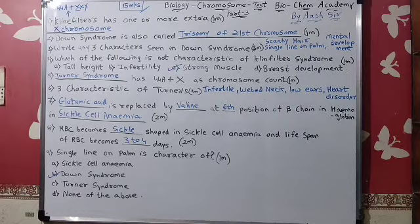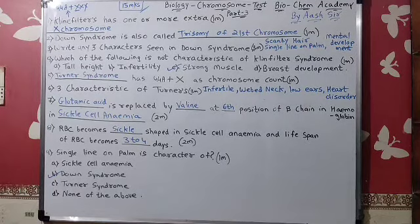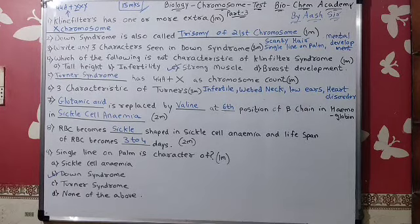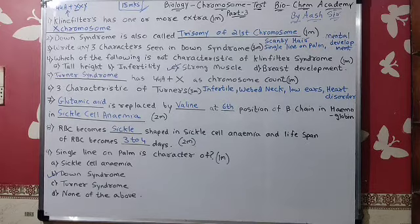Number seven: Single line on palm is a characteristic of which condition? Sickle cell anemia — no. Down syndrome — yes, that is the answer. Turner syndrome — no. None of the above — no.